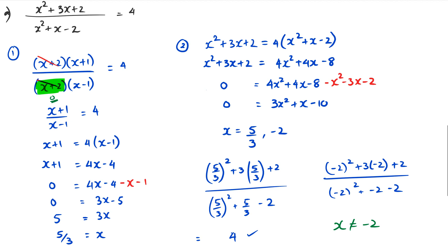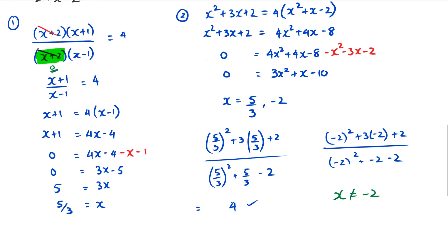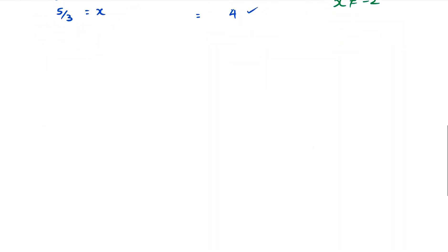So that's why we prefer method two over method one — method two gives you both potential answers, which you can then verify, rather than only finding one answer directly.